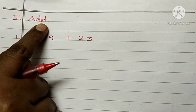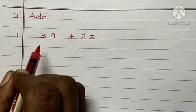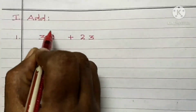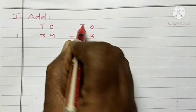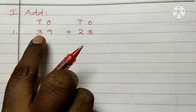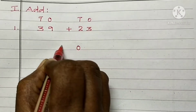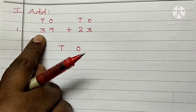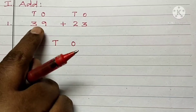Are you ready children? Add 39 plus 23. First, put the place value for the given numbers. 1's, 10's. Arrange the numbers according to their place values. How many 10's are there? 3 tens. Write 3. How many 1's are there? 9 ones.